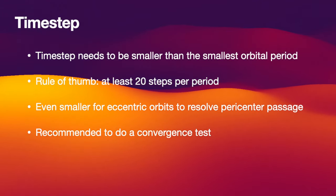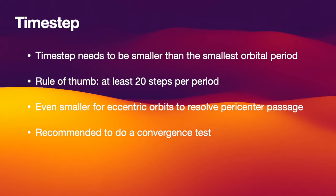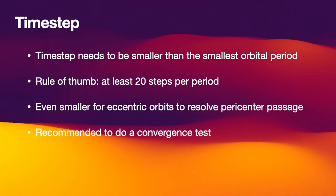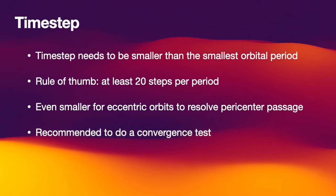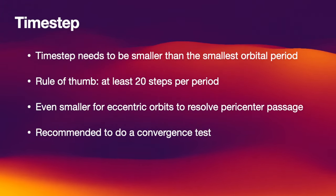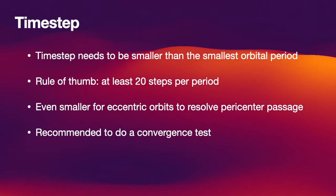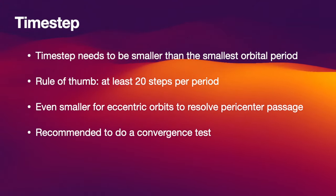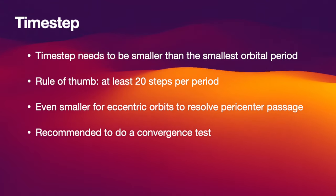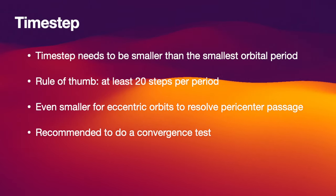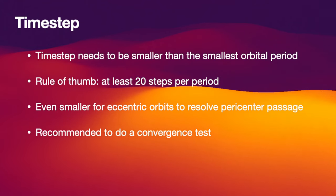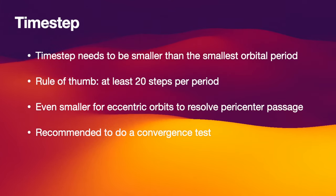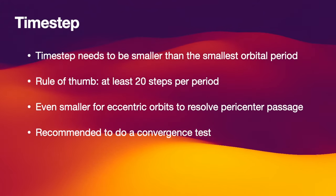So how should you choose a time step in a Wisdom-Holman integrator? Wisdom-Holman is a fixed time step integrator, so it's up to you to choose what time step is appropriate. The one important thing to remember is that you need to resolve the smallest orbital period, so your time step needs to be smaller than that. As a rule of thumb, you need at least 20 steps per period — ideally more, maybe 60 or even 100 steps per period. You need even smaller time steps if your orbits are very eccentric, because you need to resolve the pericenter passage. That time for the planet to pass through the pericenter is only a small fraction of the orbital period, so you sometimes need to choose a time step significantly smaller than an orbital period for highly eccentric planets.